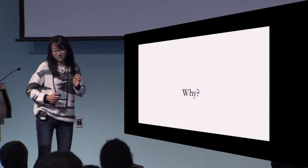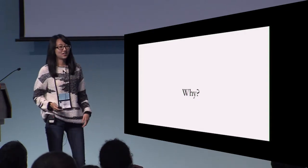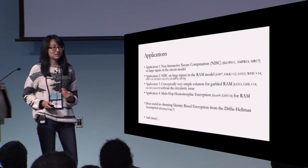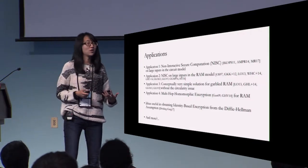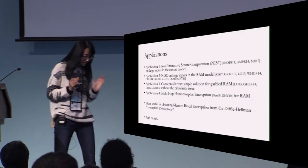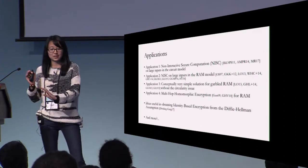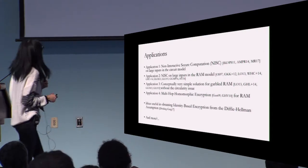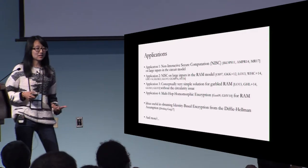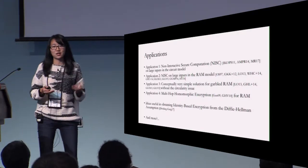But you might be asked: why should I care about this primitive? Why is it interesting at all? One reason is that it turns out to be very useful and very powerful. Here are a bunch of applications we found using laconic OT in different scenarios of secure computation, and we believe there are more. We believe it is a very powerful tool to reduce communication complexity and computational complexity in different scenarios. I want to mention the last point is not a direct application of laconic OT, but our ideas and techniques have been very useful to construct identity-based encryption from the Diffie-Hellman assumption, which you have already seen yesterday.